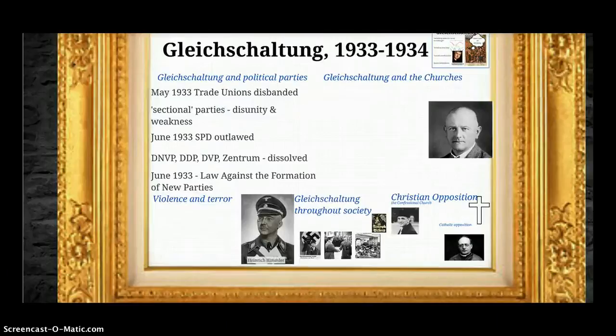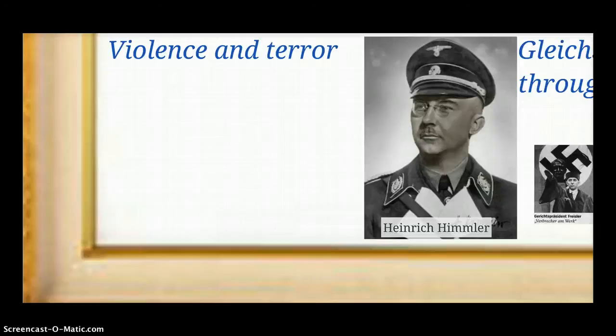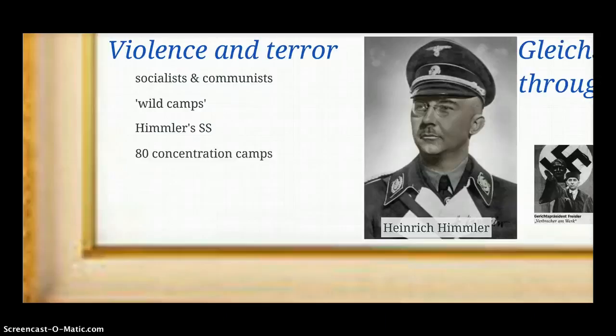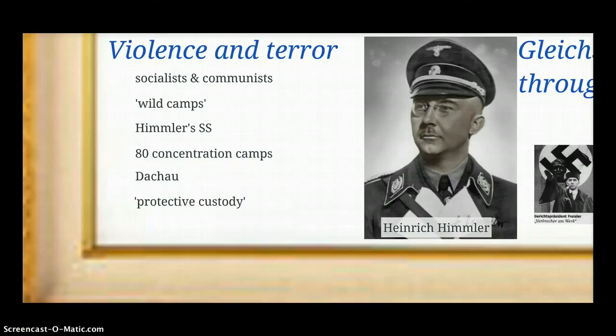When trying to get people into line, it's often a combination of the carrot and the stick. This is the stick — violence and terror. The Socialists and Communists had been long-term enemies of the Nazis. They were initially dealt with by being put into so-called wild camps, under the control of Himmler's SS. There were about 80 concentration camps modeled on the first one opened at Dachau. These were not the death camps — initially it was so-called protective custody, but they were brutal places of beating, intimidation, violence, and occasional murder.